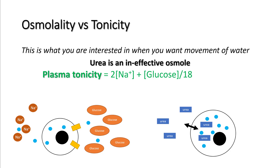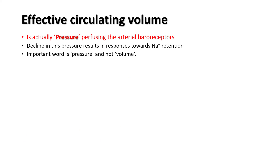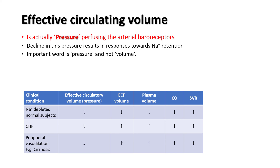So plasma tonicity is governed by the levels of sodium and glucose only. Another important concept to understand is effective circulating volume. This is actually the pressure perfusing the arterial baroreceptors in your carotid and aortic bodies, and a decline in this pressure results in responses toward sodium retention. The important word here is pressure, not volume. Effective circulatory pressure depends upon three characteristics: plasma volume, cardiac output, and systemic vascular resistance. Your ECF volume unfortunately does not have any effect on effective circulating volume.